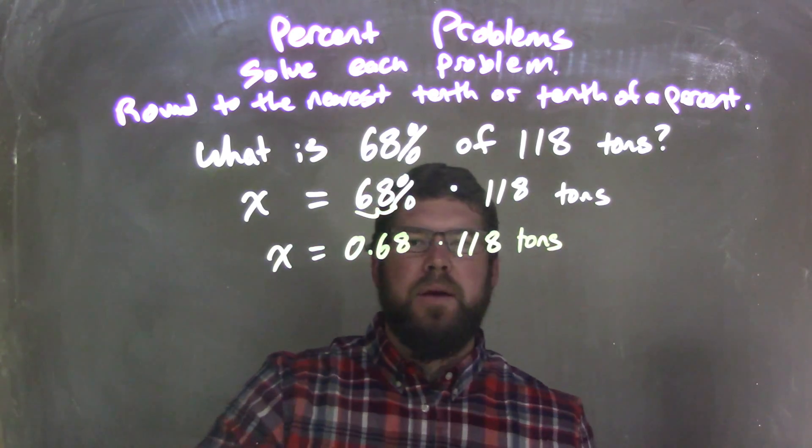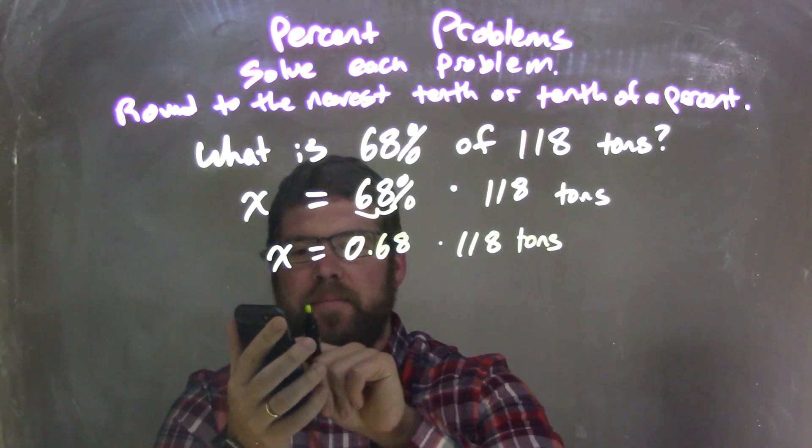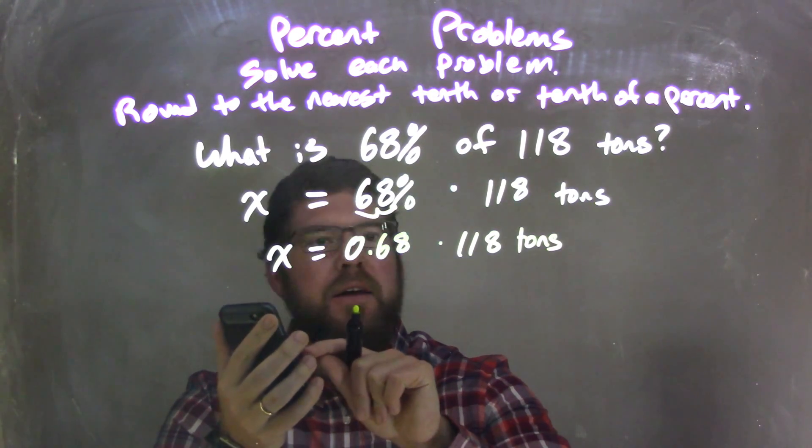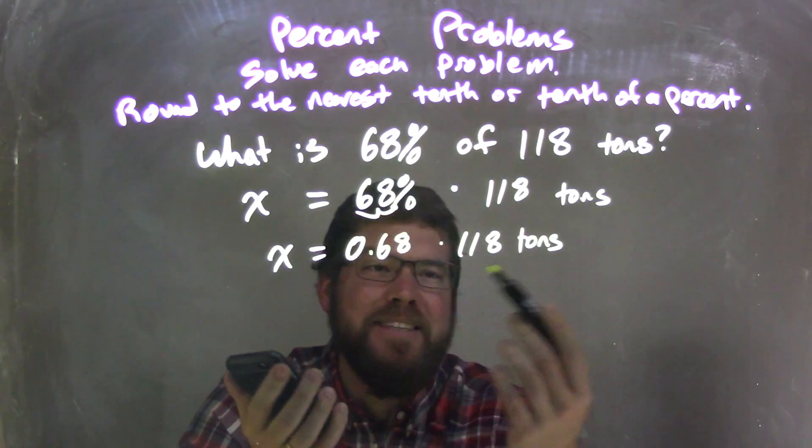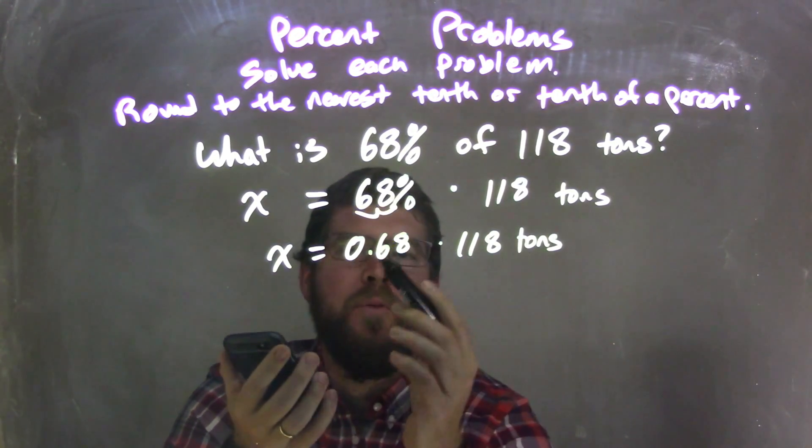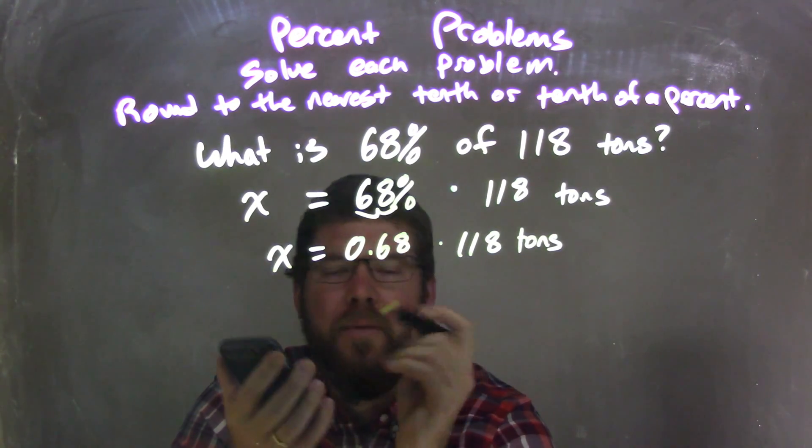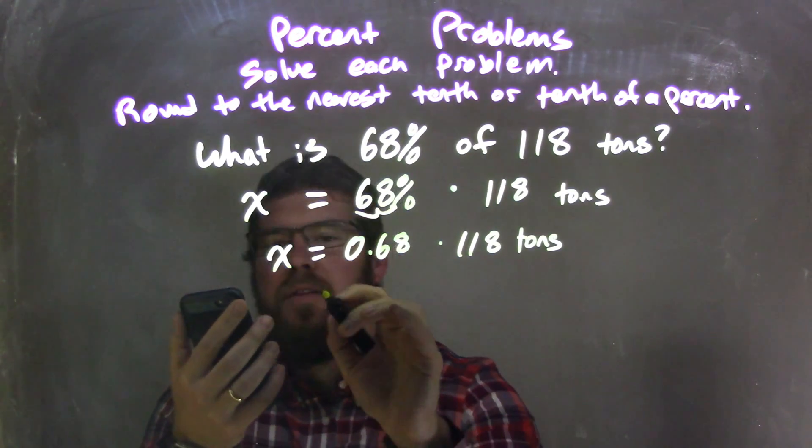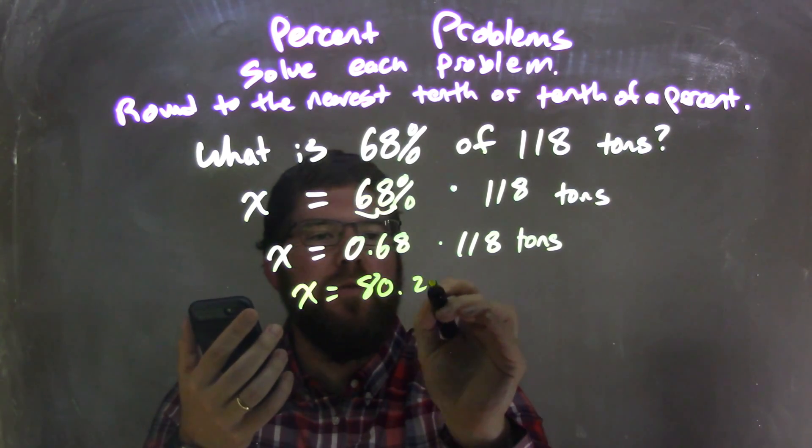Then from there, I use my calculator to multiply 0.68 times 118. Think to yourself, this number has to be less than 118 because we're multiplying by a number that's between 0 and 1. And it is, it's 80.24, so X equals 80.24 tons.